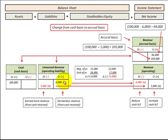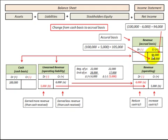Looking at unearned revenue where we'd have a six thousand dollar credit balance and a hundred thousand dollar debit balance in our cash, we need a balancing entry to our revenue on an accrual basis of ninety-four thousand dollars. Now looking at unearned revenue with a debit balance of five thousand and a debit balance in cash of a hundred thousand, we'd need a balancing entry into our accrued revenue account of a hundred and five thousand dollars.